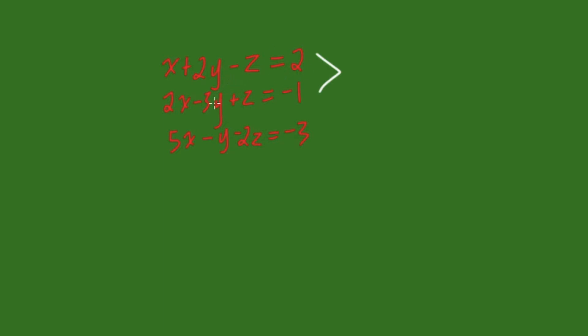So, if we add these top two together, that gives us 3x minus y and then z is gone. So, we just have equals two plus negative one, which is one.